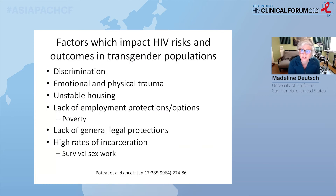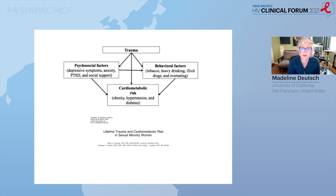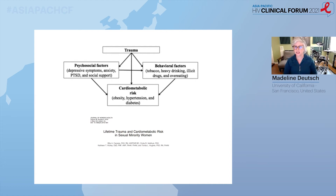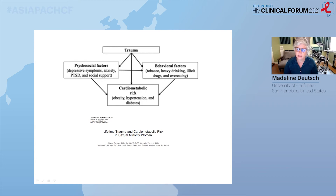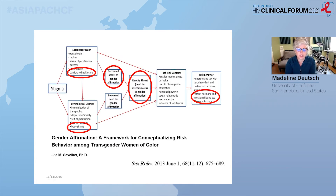A number of factors impact HIV risk and outcomes in trans populations, and all of these factors are involved in stigma. In addition to behavioral factors, there are direct linkages between trauma and psychosocial contributors to actual inflammatory changes in the body — activation of the adrenal axis, resulting in increased inflammation, cardiometabolic, and other health risks. In an HIV context where we're already concerned about increased cardiometabolic risk, these are additional things to think about. There are additional biomedical pathways through which trauma and cumulative psychosocial distress can directly impact inflammation in the body.